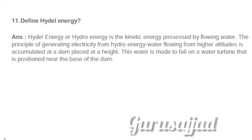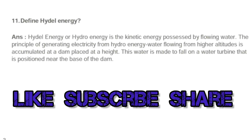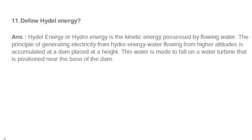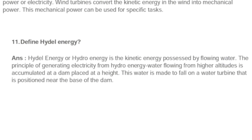Define hydro energy. Hydro energy is the kinetic energy possessed by flowing water. Water flowing from a higher altitude is accumulated at a dam placed at a height. This water is made to fall on a water turbine positioned near the base of the dam to generate electricity.